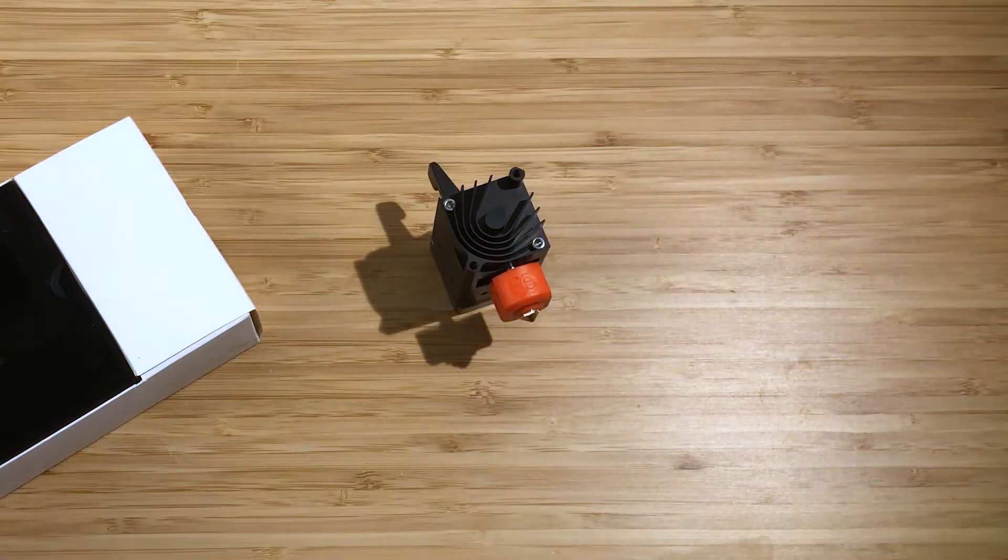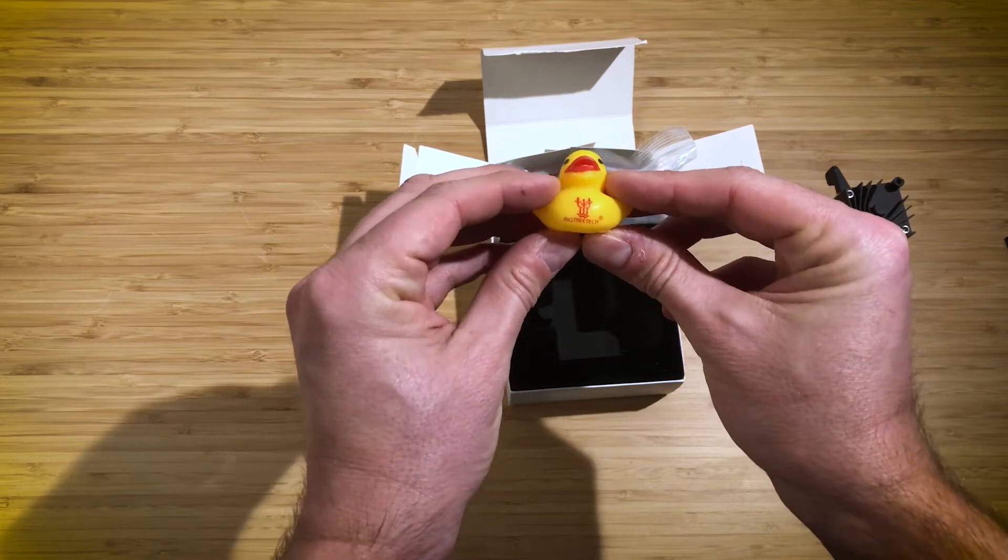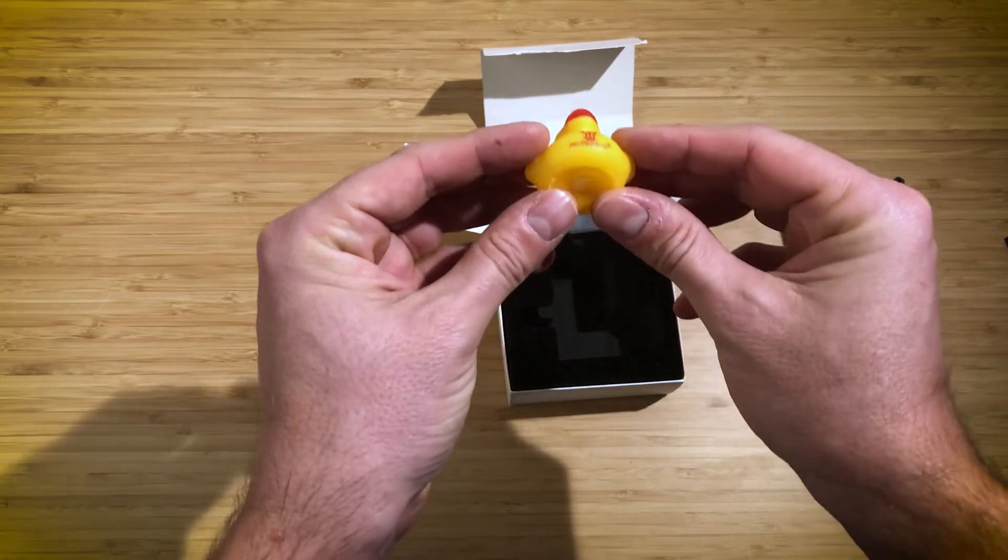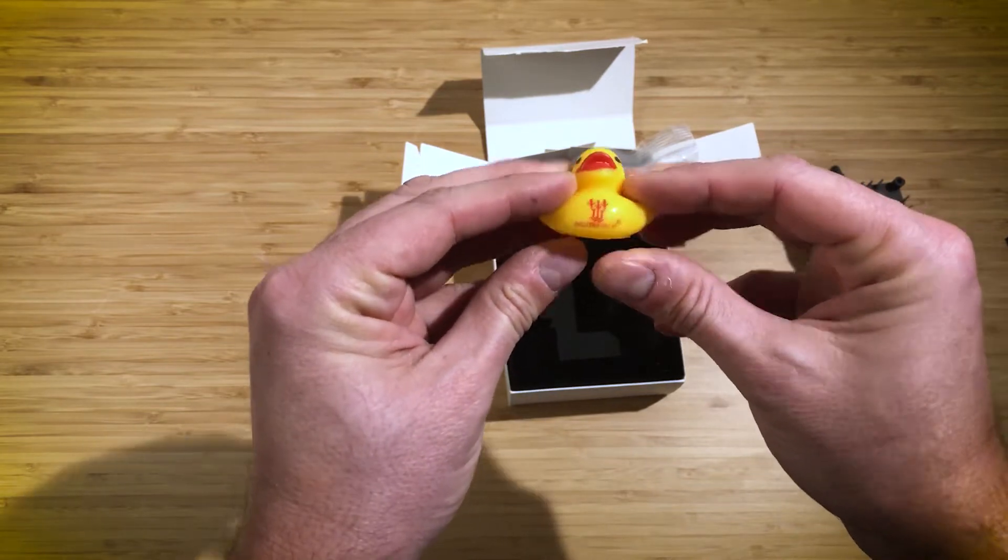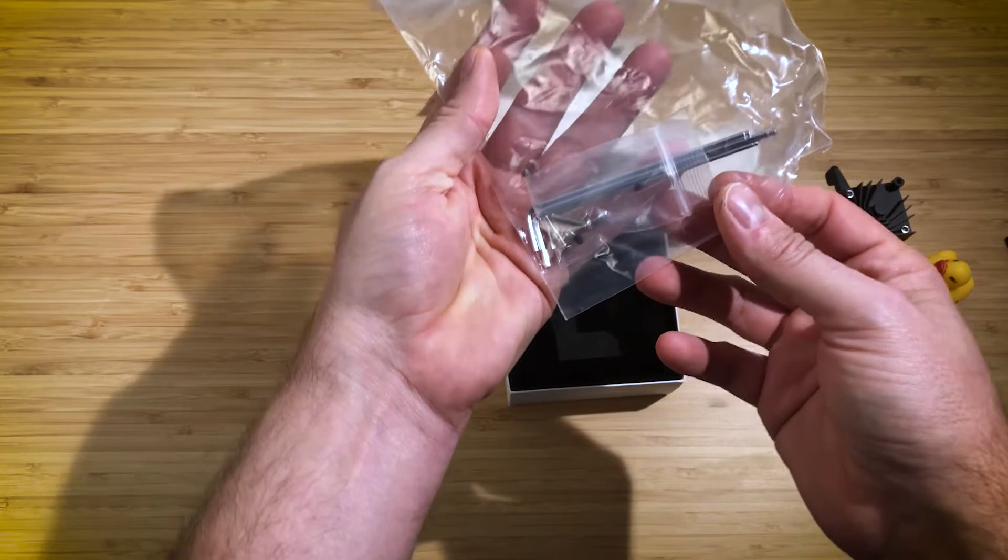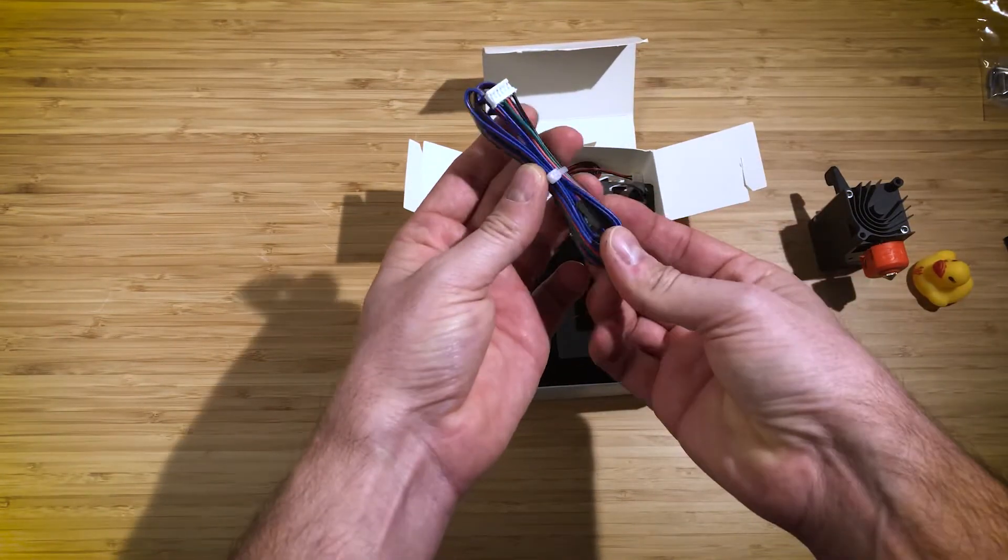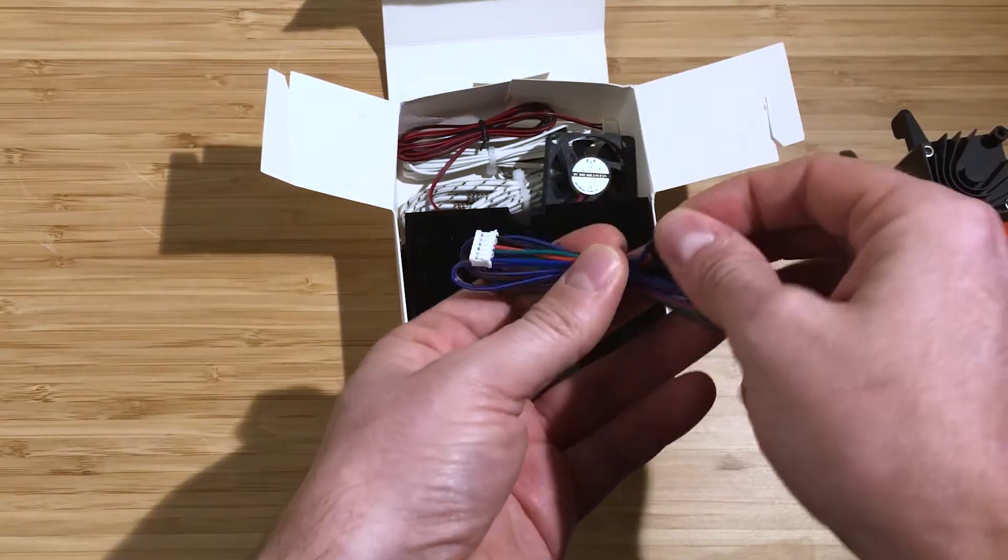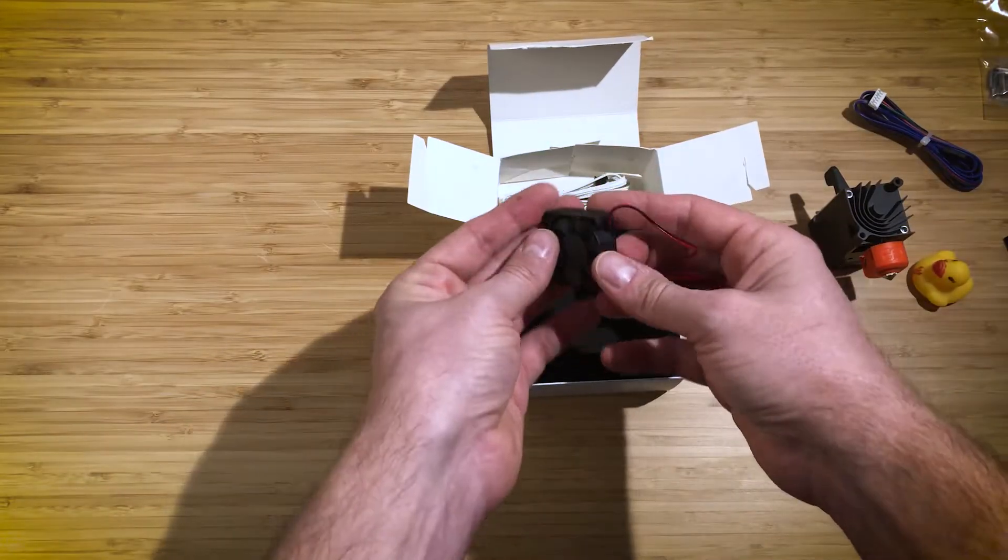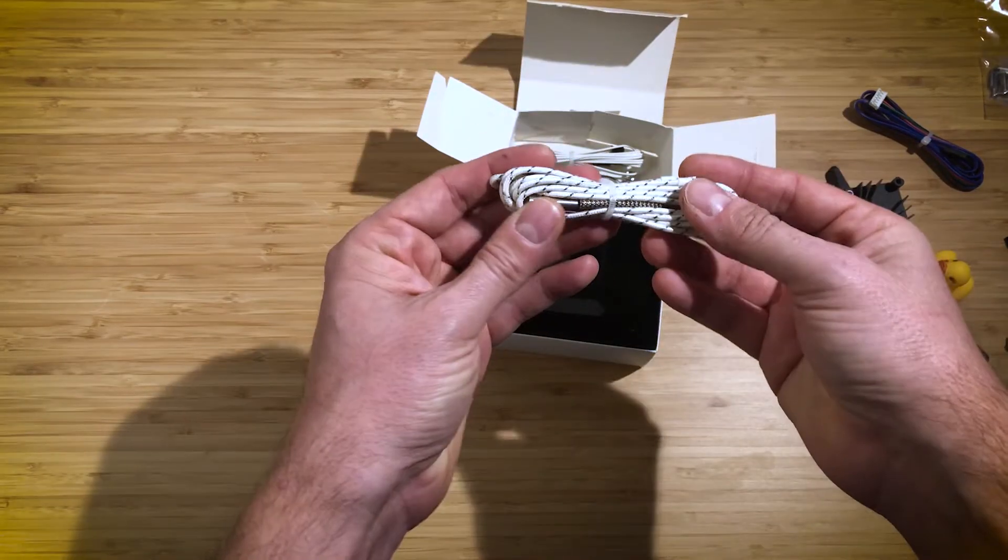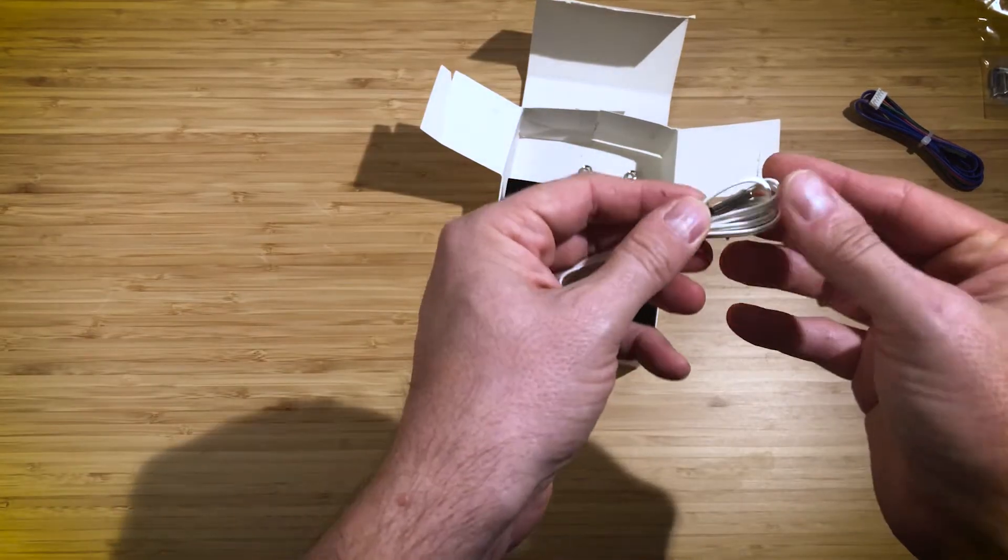Let's see what else we have in the package. Rubber duck. This is the signature of BigTreeTek. Yeah, this is tools and a bunch of screws. Extension cable for the motor, I guess. I don't know why they have this connector here. Small fan. This is the heat cartridge. And this is the thermistor.